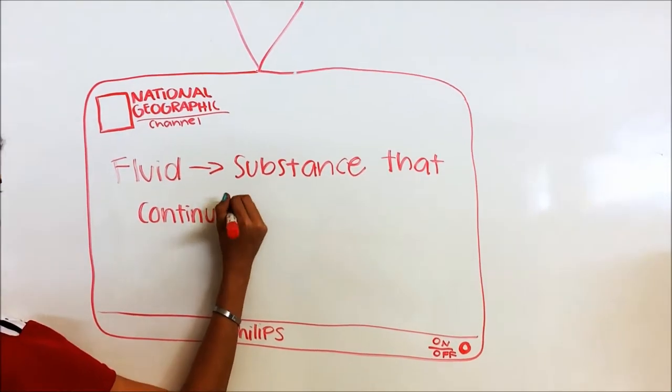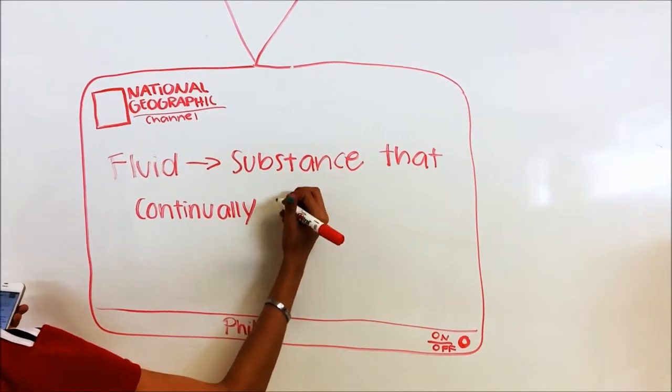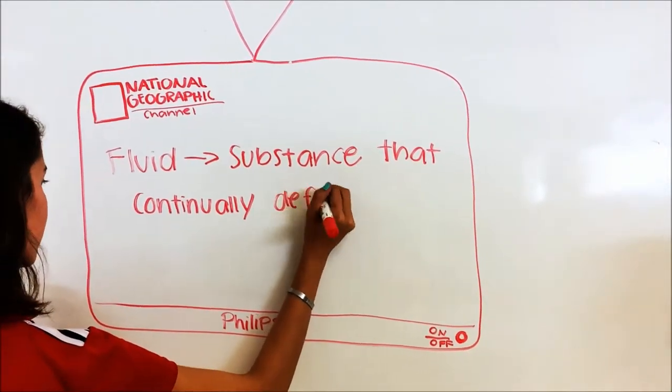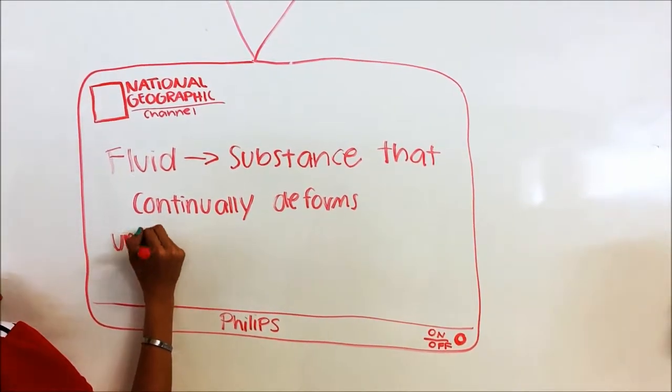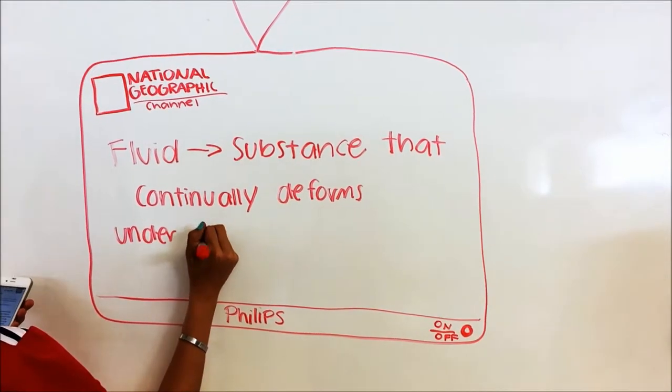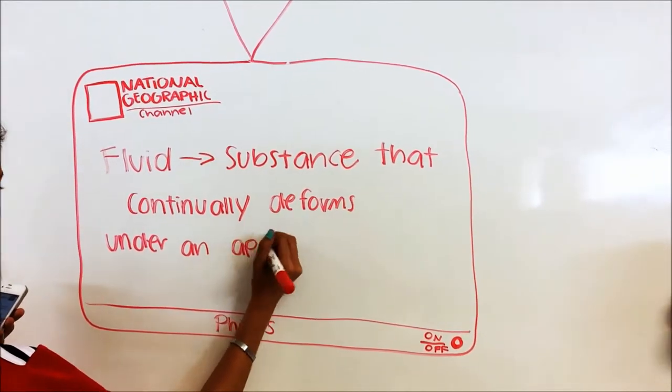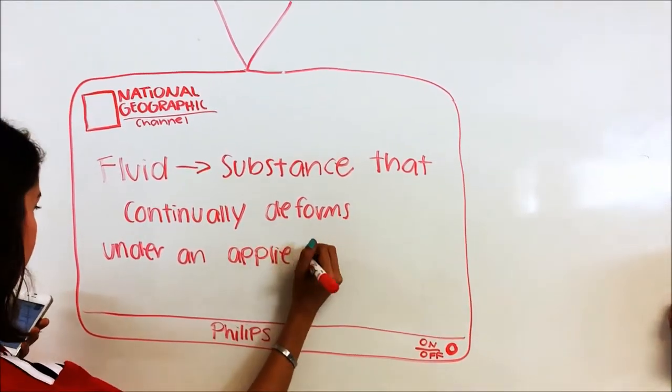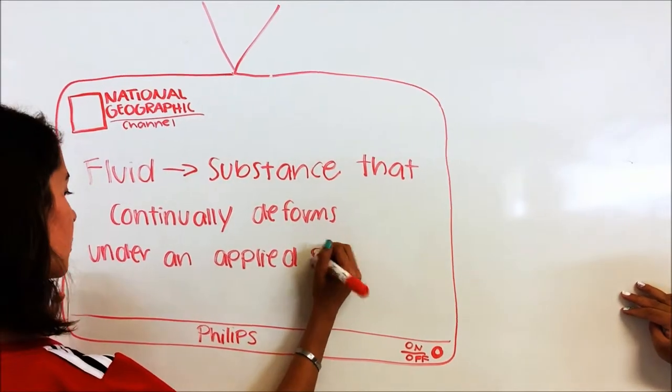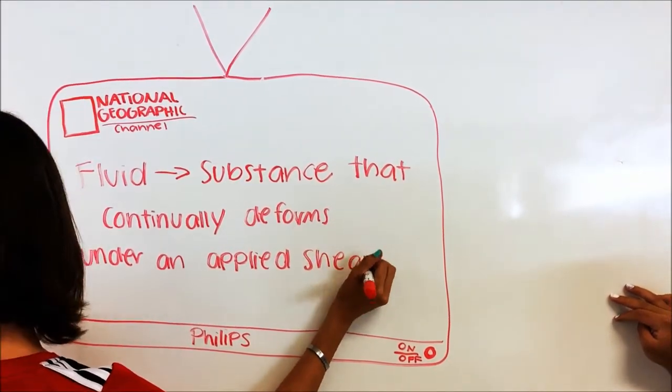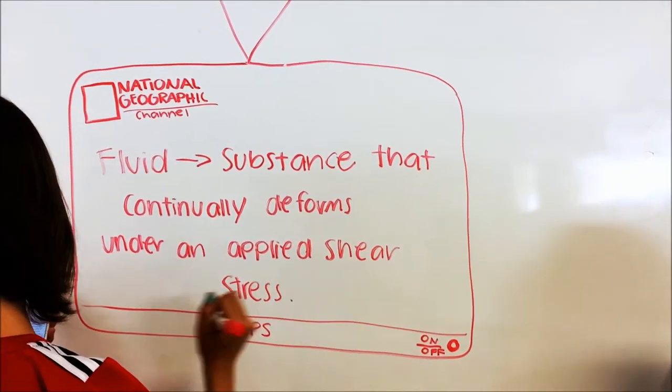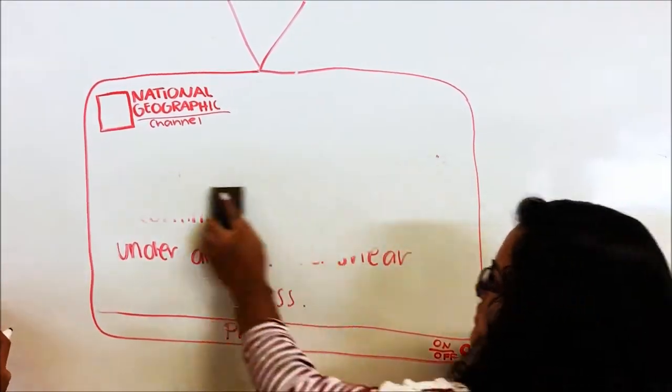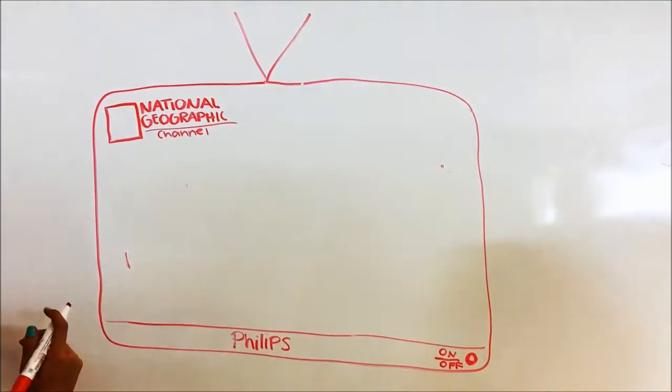A fluid is a substance that continually deforms under an applied shear stress. Fluids can be defined as a substance that has zero shear modulus, or in simple terms, a fluid is a substance which cannot resist any shear force applied to it.